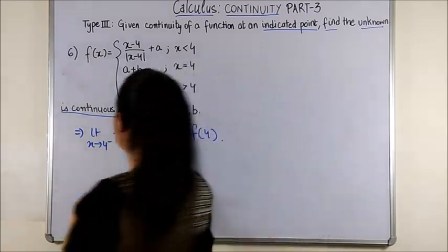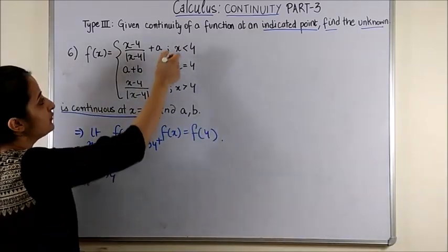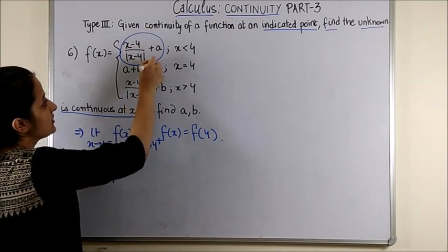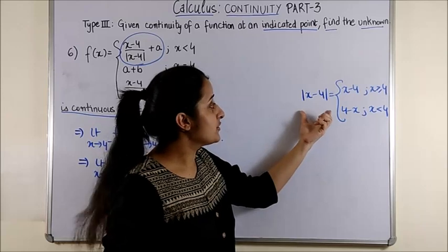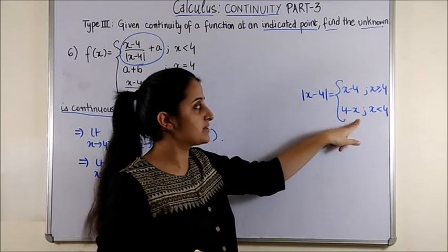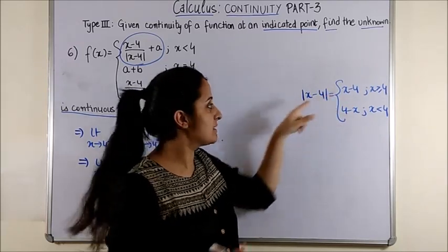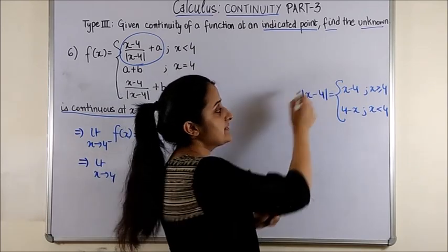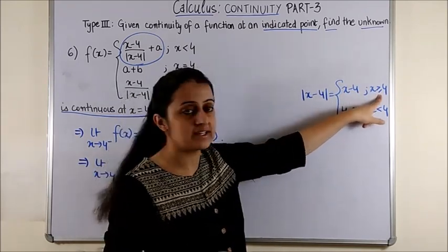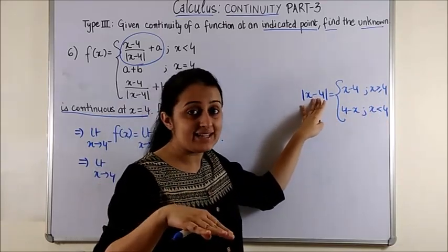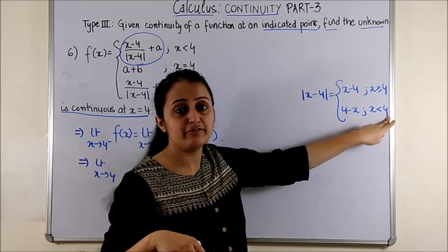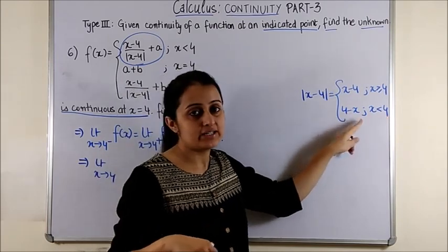Now substituting the values. Please note x tending to 4 minus means this function. So if you recollect your modulus function, modulus of x minus 4 could be split this way. It gives us the positive answer provided the number inside is greater than equal to 0 which gives us x greater than equal to 4. And when x minus 4 is less than 0, that is x is less than 4, you get 4 minus x.